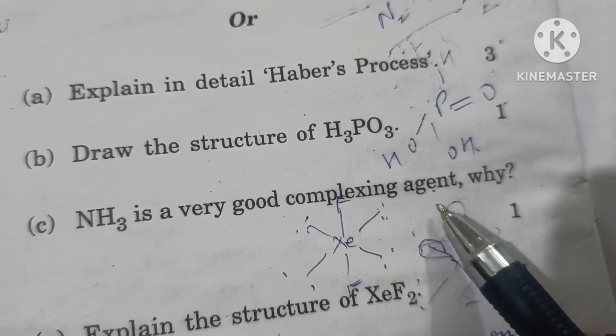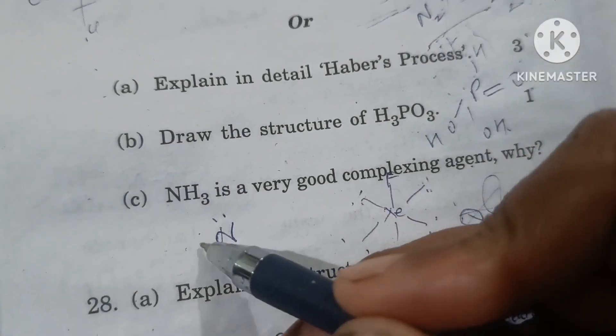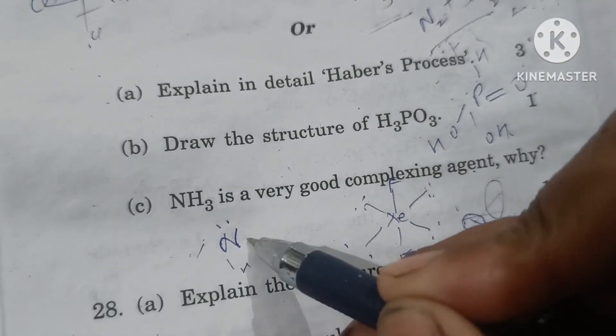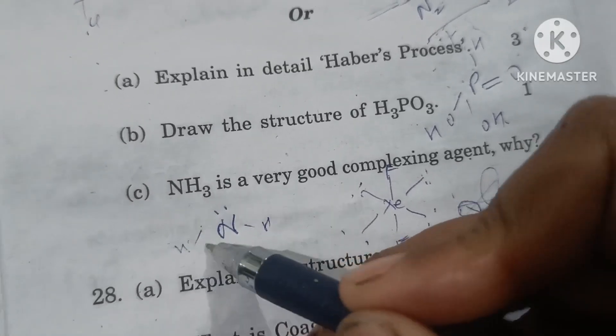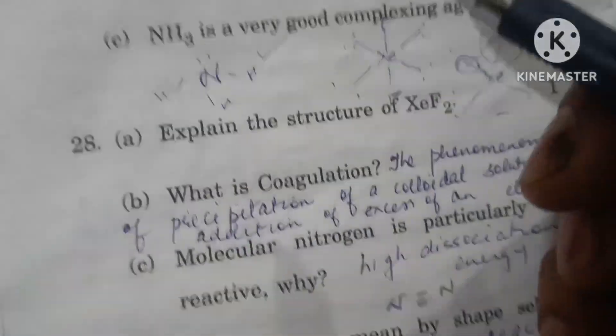Ammonia is a very good complexing agent because ammonia's nitrogen has a lone pair of electrons which it can easily donate to transition metals to form complexes. It's a good complexing agent.